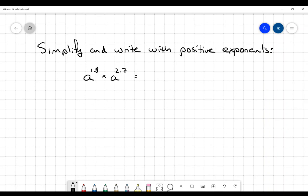All right, hi everybody. So this question is asking us to simplify and write with positive exponents. We're starting with a very simple one. It's just going to be two powers multiplied together. A to the 1.8 multiplied by A to the 2.7.